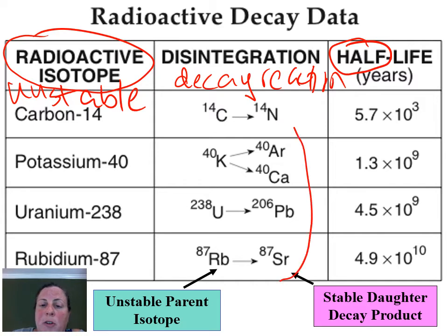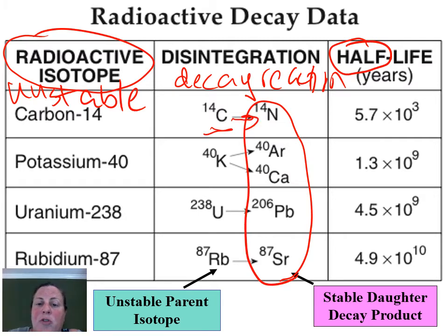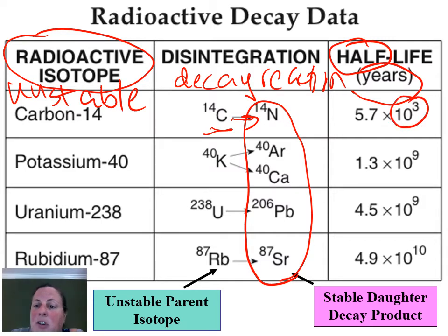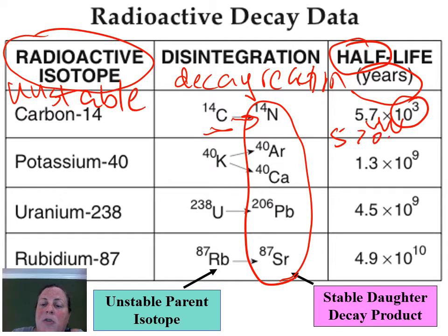The stable daughters are on the right side. So carbon-14, for example, the symbol is C14 — it changes into nitrogen-14, N14. This takes 5.7 times 10 to the 3 years. In scientific notation, it tells us how many places to move our decimal to the right — in this case, 3 places. This would be 5,700 years.